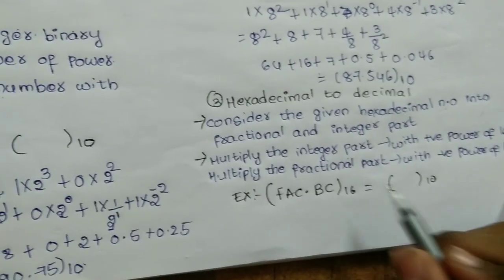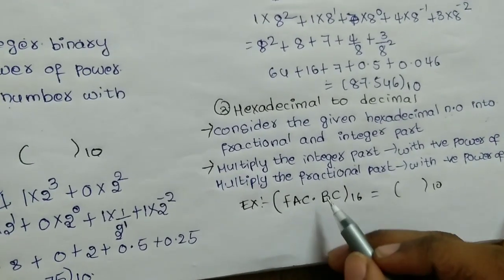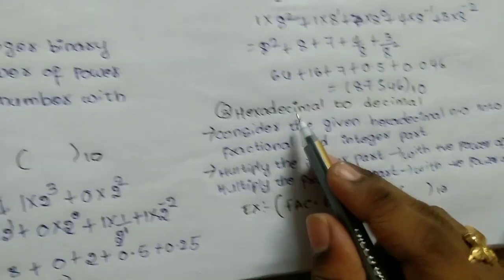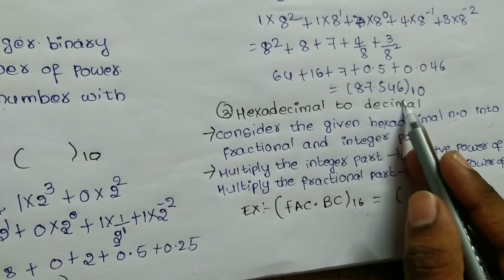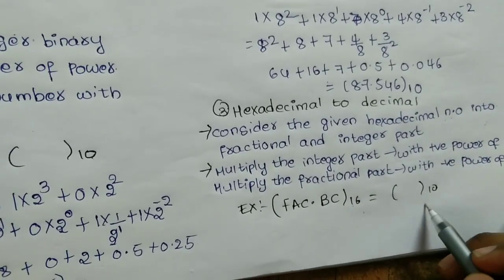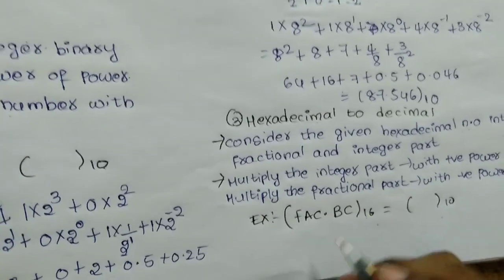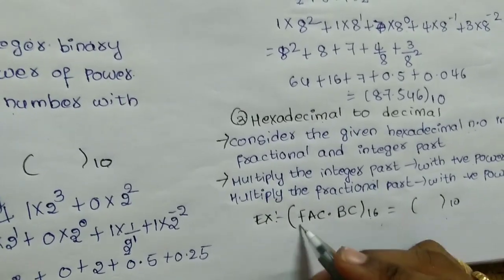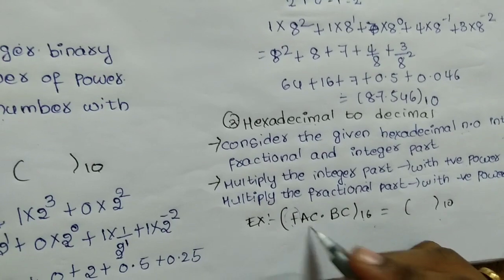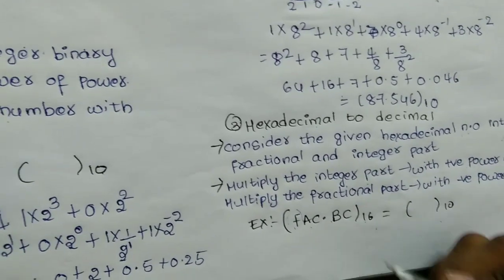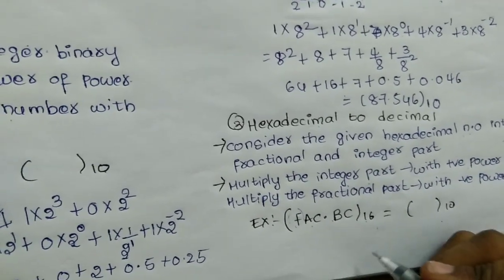The example is: F, A, C . B, C with suffix 16 (hexadecimal) to be converted to decimal. There is a hexadecimal table. From the table: F = 15, A = 10, C = 12, B = 11. We will use this table to substitute values.